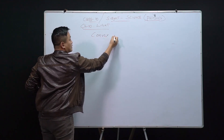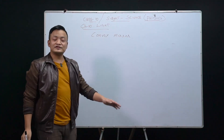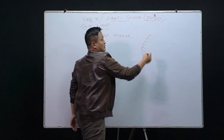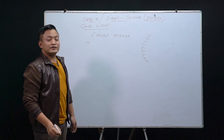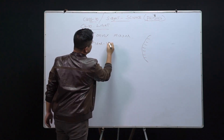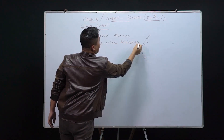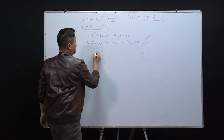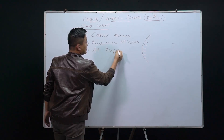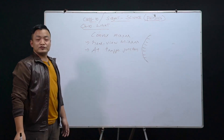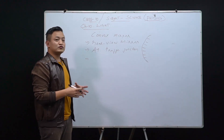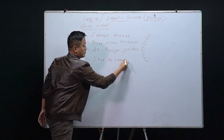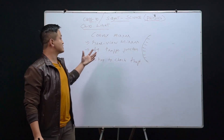The convex mirror is one where the reflecting surface bulges outwards. The uses of convex mirror: first, it is used as a rearview mirror in a vehicle, and the second important use is at a shop to check for theft.